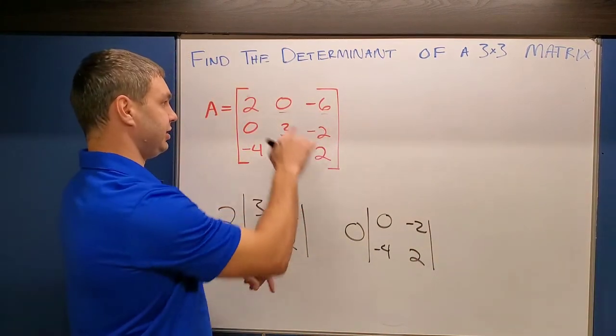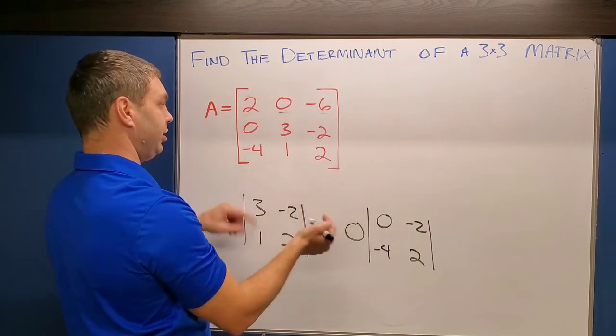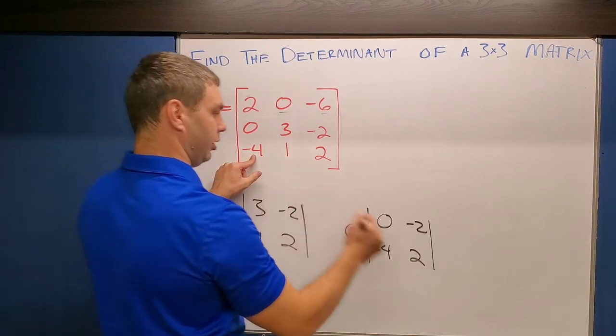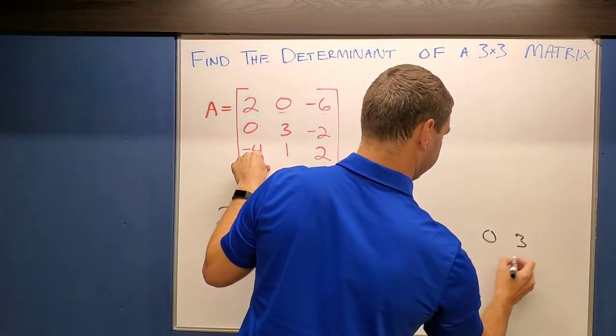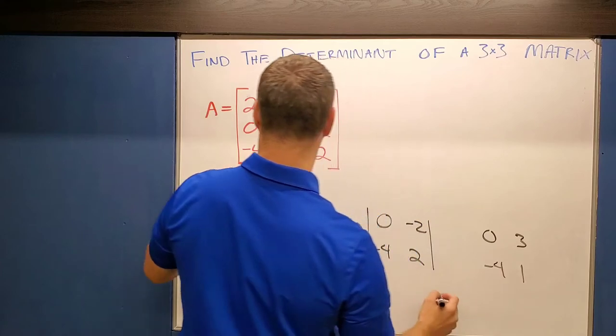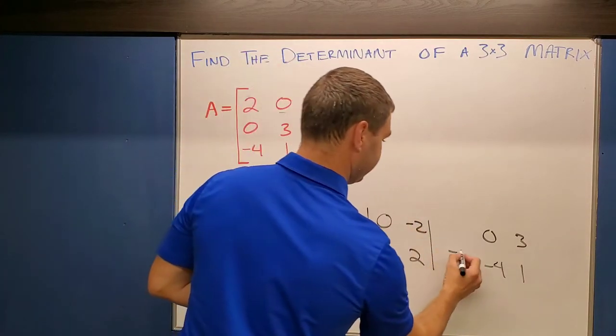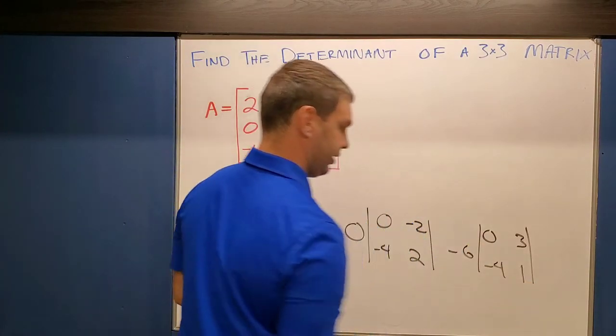And then lastly, this negative six, that's going to cross out the top and the right row. So I'll have zero, three, negative four, one left over, and then that's with the negative six out front of that determinant.